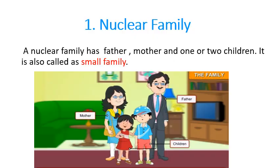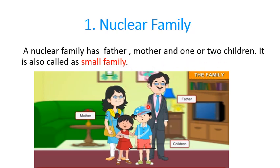Now we will see about nuclear family. A nuclear family has father, mother and one or two children. As you can see in this picture, mother, father and their two children — this type of family is called a nuclear family. A nuclear family is also called a small family because there are fewer members in that family.